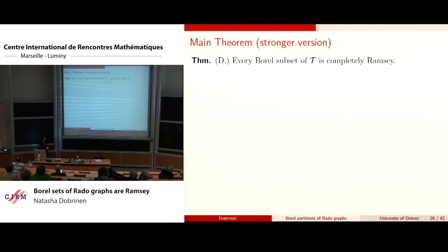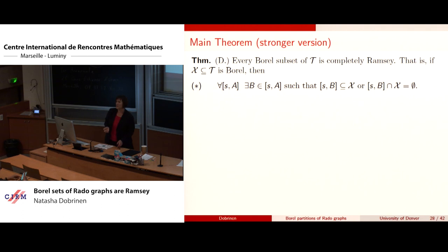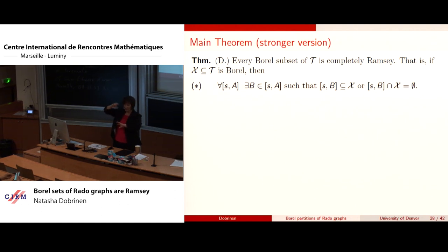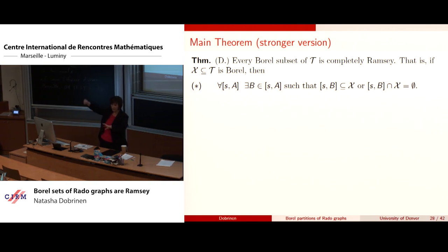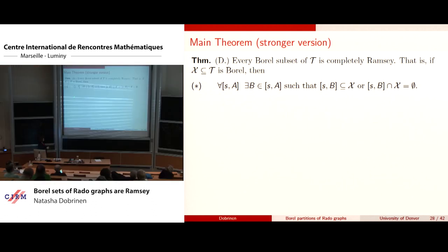A slightly stronger version of the theorem says that every Borel subset of T — this collection of strong trees with coding nodes — is completely Ramsey. The topology is the same topology you'd use for Milliken strong trees: finite strong coding trees together with the collection of other strong coding trees that end-extend it form a basic open set. This is a metric topology.